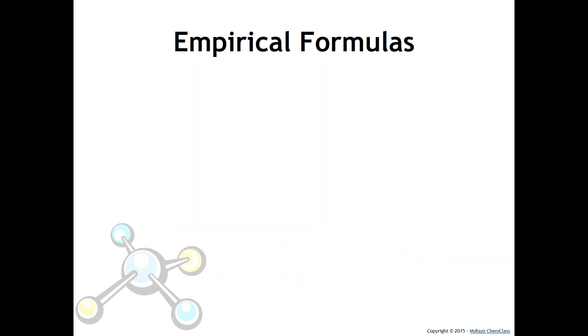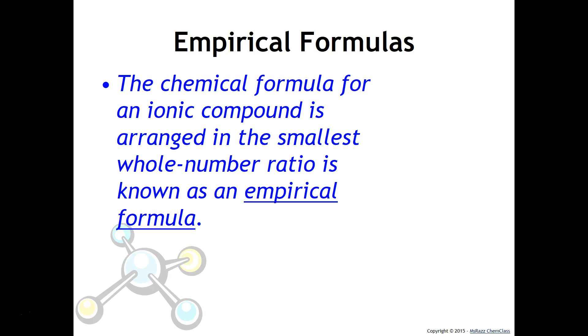One last thing we should talk about is empirical formulas. Empirical formulas is basically an ionic compound that's written in the smallest whole number ratio. So while we have large crystals that have lots and lots of ions in them, we always write the smallest whole number ratio of ions to each other. And that is called the empirical formula. For example, it would be Mg3N2, not Mg6N4. That's really important. So always just make sure that your formulas are written in the smallest ratio.